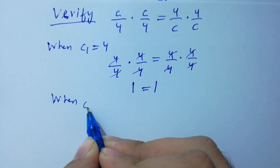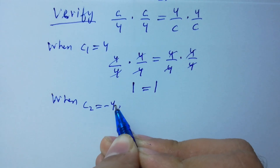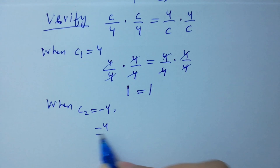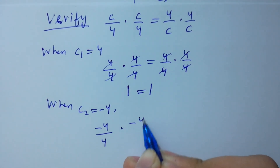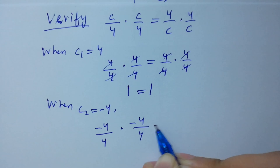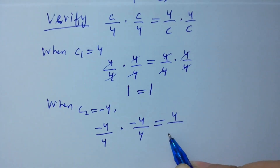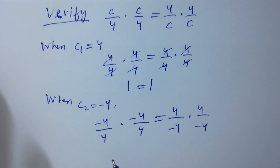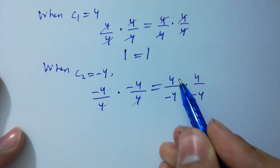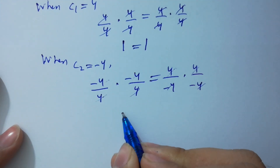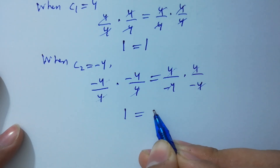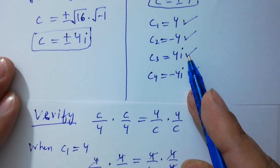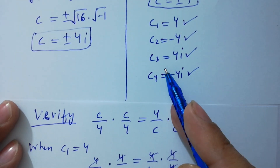Next, when c2 equals minus 4, we have (minus 4/4) times (minus 4/4) equal to (4/minus 4) times (4/minus 4). The 4s cancel, and minus times minus gives plus 1 equals minus times minus plus 1, so it means c2 equals minus 4 is also correct.